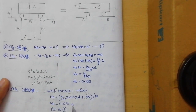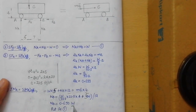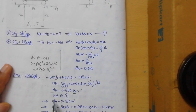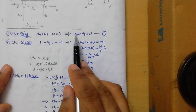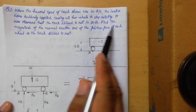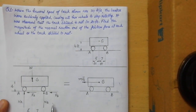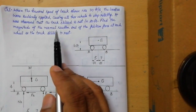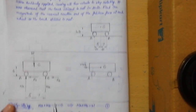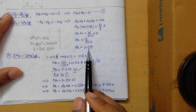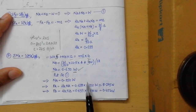Solving gives NB in terms of W, since the truck's weight is not provided in the question. This is our first answer. Substituting NB into Equation 1 (NA + NB = W) gives NA. We have now found both normal reactions NA and NB. Next, to find the friction forces FA and FB: FA = μk·NA and FB = μk·NB. Since μk and both normal reactions are now known, we can calculate FA and FB.